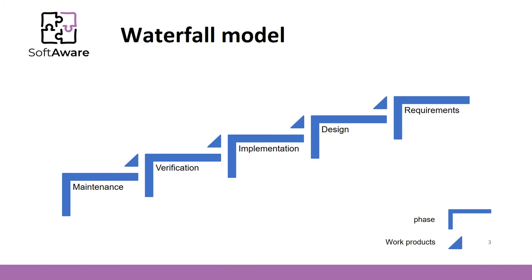In the beginning, the requirements are specified and the requirements specification document is provided for the design phase. In the design phase, the architect creates the complete software system design — in a way, like an architect creating a design for a building. This relates to the term 'big upfront design.' The created design is then provided to the implementation phase.